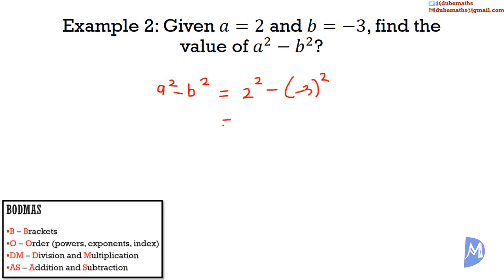Using BODMAS: 2 multiplied by 2 is equal to 4. Subtract negative 3 squared: negative 3 multiplied by negative 3. 3 multiplied by 3 is equal to 9, and negative by negative is a positive, so positive 9. And 4 subtract 9 is equal to negative 5.